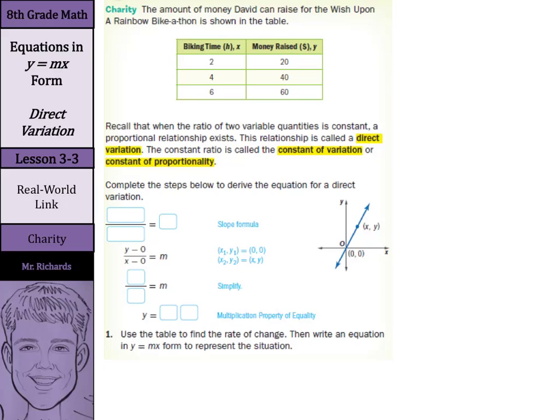Complete the steps below to derive the equation for a direct variation. Our slope formula that we have been practicing is y2 minus y1 over x2 minus x1 equals m. In this graph, we have a point here at our origin, 0, 0, and then a random point xy. They substituted in making x1, y1, the 0, 0, and the x2, y2, the xy.